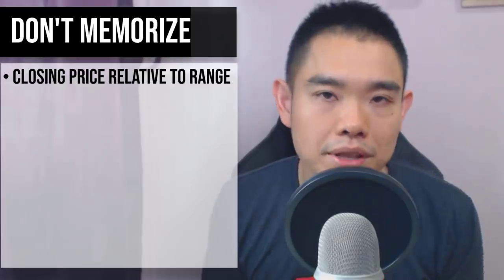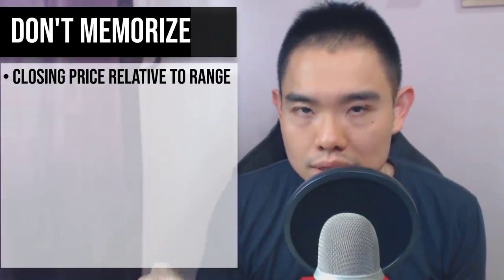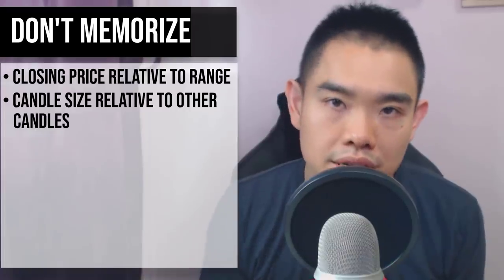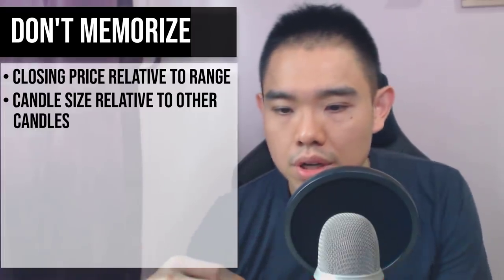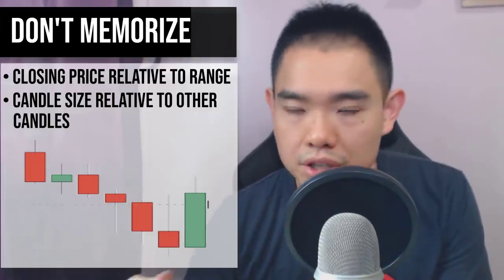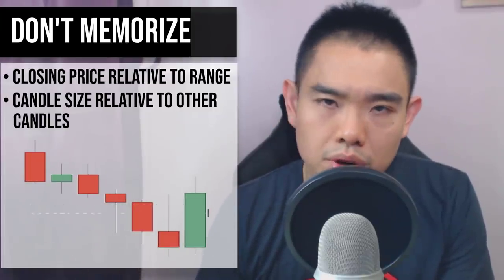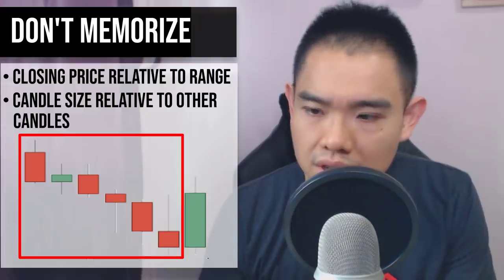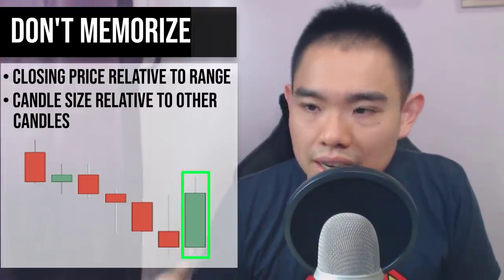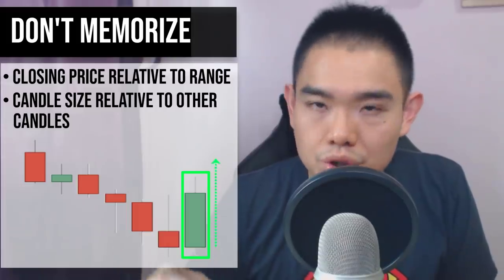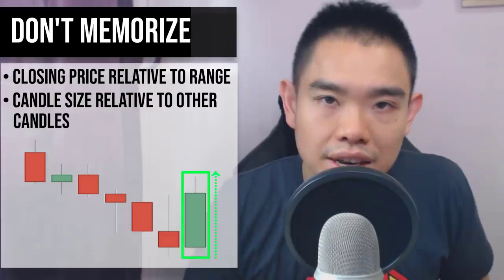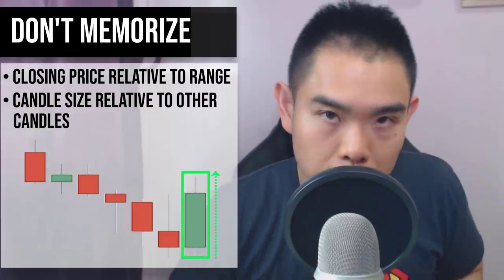The second thing to pay attention to is: what's the size of the candlestick pattern relative to the earlier candles? For example, if you see one huge bullish engulfing pattern and compared to the last five candles it is two times larger, this tells you there is likely conviction behind the move — it has overpowered the earlier candles in terms of strength. But if the candle is of similar size or even smaller than the earlier candles, it's telling you that volatility is contracting and this candle is pretty much insignificant in the grand scheme of things.